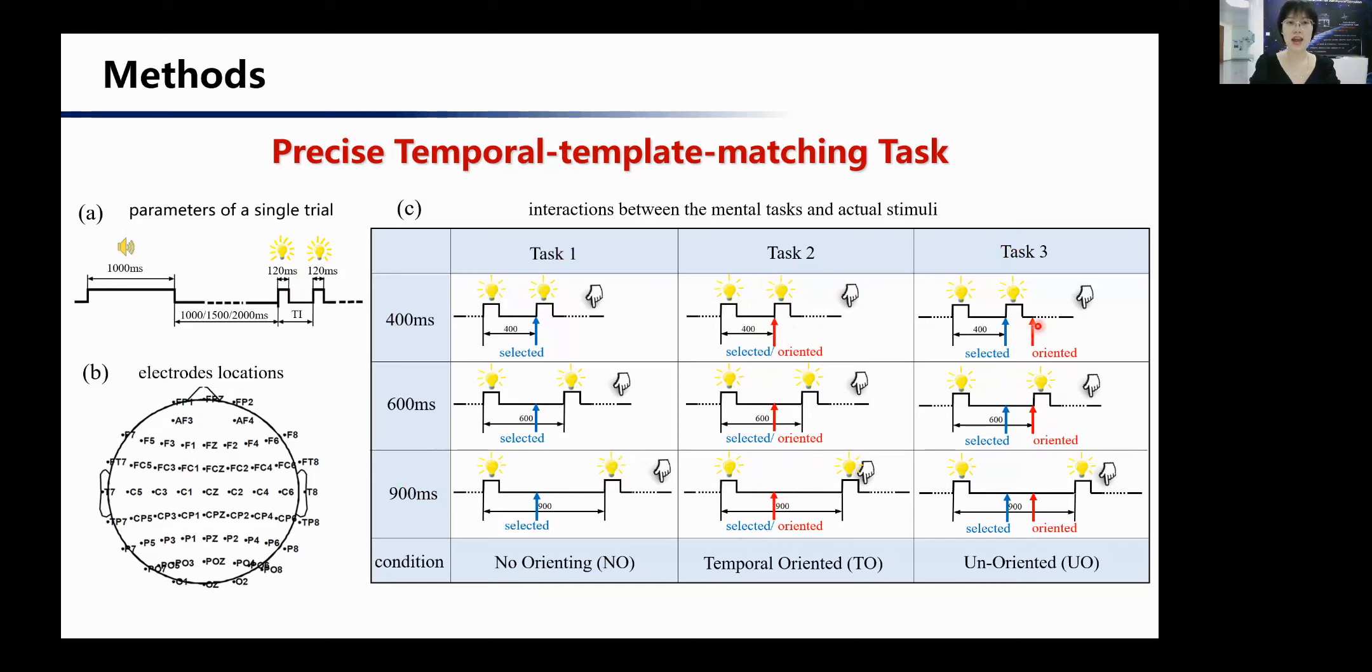While the orientated moment for Task 2 and Task 3 were 400 millisecond and 600 millisecond respectively, just as the red arrows showed. In data analysis, as the blue arrows showed, the moment of 400 millisecond, before which there was no stimulus, was defined as selected moment. Therefore, for 400 millisecond, the above test led to three conditions: no-orienting, temporal-oriented, and un-oriented. For short, we called them NO, TO, and UO conditions respectively.